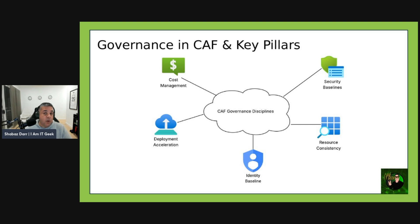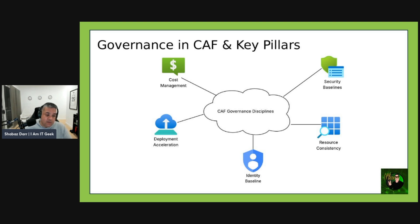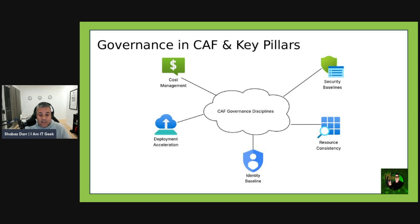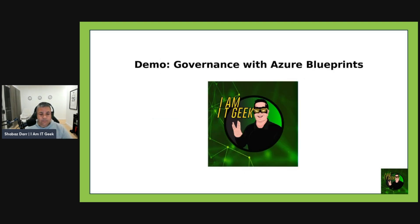The final discipline is deployment acceleration, whose goal is to enable secure and compliant automation of deployments. Tools include Azure DevOps, GitHub Actions, CI/CD pipelines, and infrastructure as code — for example, automating resource deployment with Bicep templates and policy checks. These disciplines are not siloed — they're interconnected. Enforcing tagging, part of resource consistency, helps cost tracking in cost management, and using PIM from the identity baseline supports your security baseline.